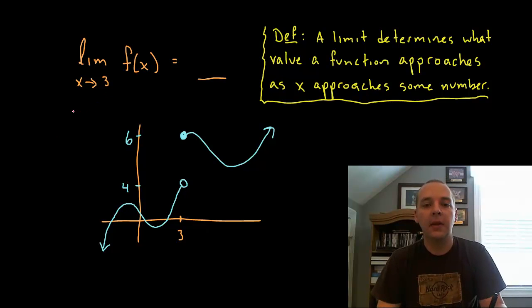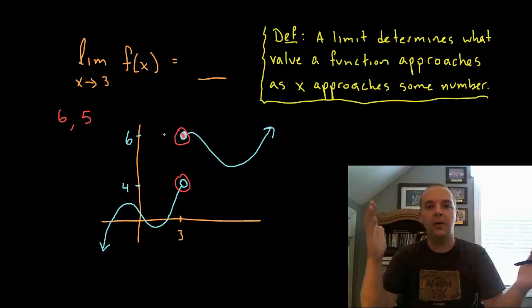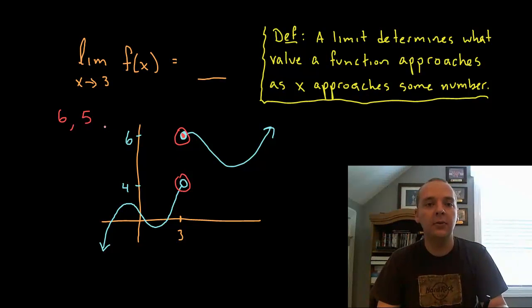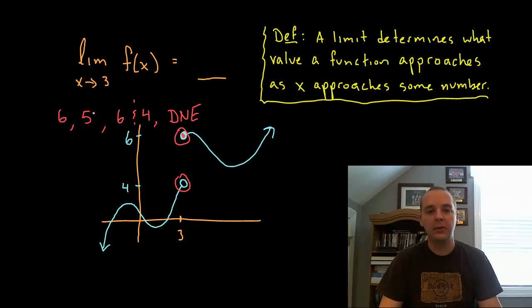Sometimes I'll hear the limit might be 6 because you see how this is a closed dot and this is an open dot, so maybe for whatever reason that has a stronger influence on the limit being 6 than 4 maybe. I've heard, it might sound silly to some of you, but I've heard an answer of 5 because maybe split the difference between 6 and 4 and the limit or where the function is headed is kind of halfway between those two. I've heard 6 and 4, maybe they're both limits perhaps, and I've also heard maybe the limit does not exist.